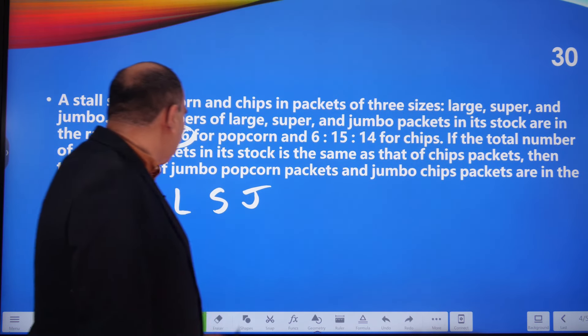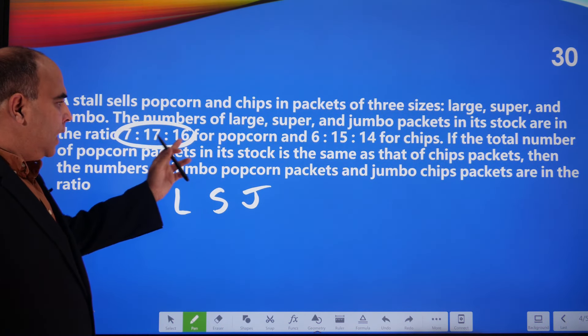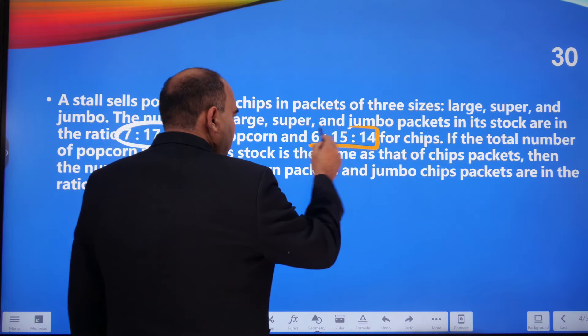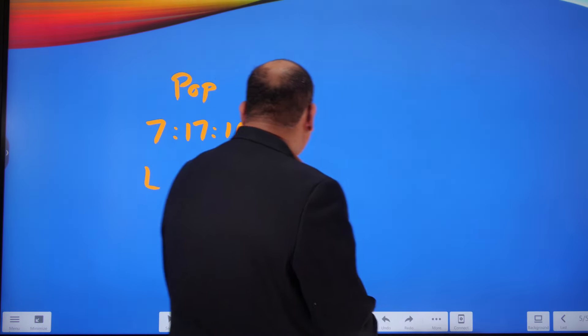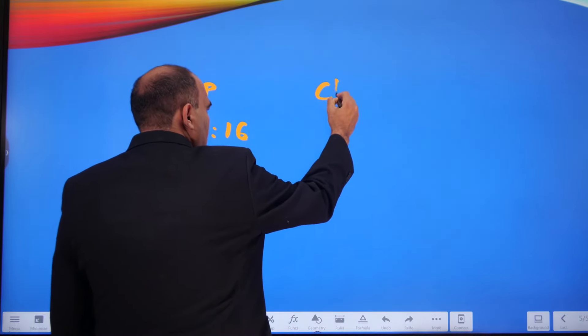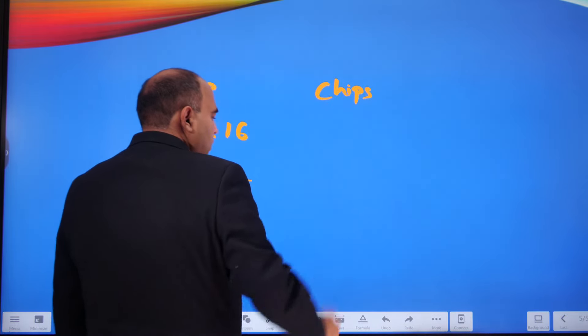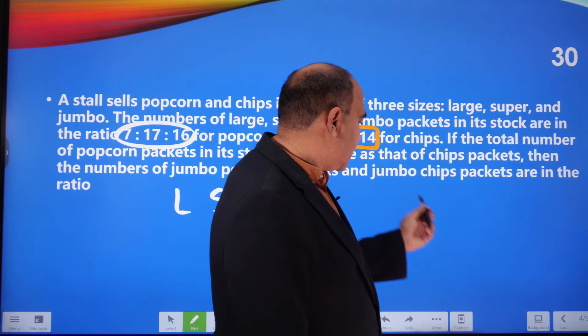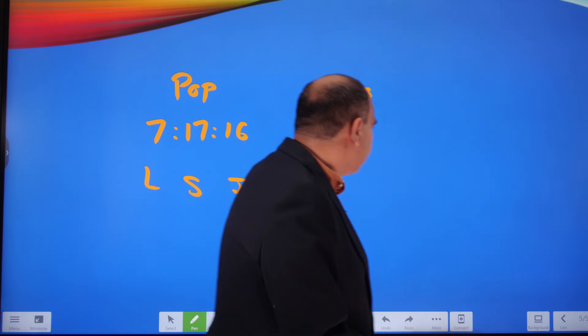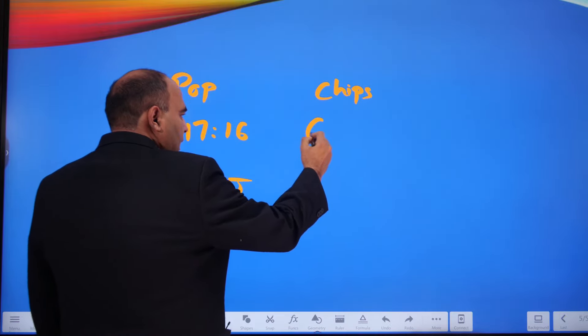And 6:15:14 for chips. For chips, the large, super, and jumbo numbers are in the ratio 6:15:14. Now we know mathematically that every ratio has a kind of multiplier.